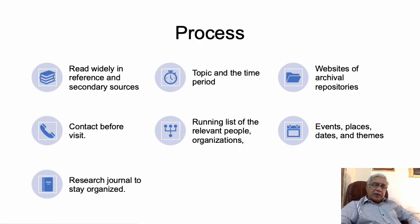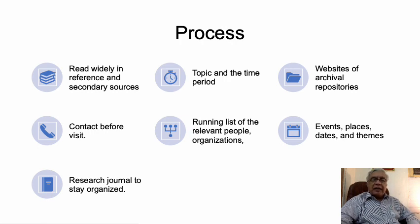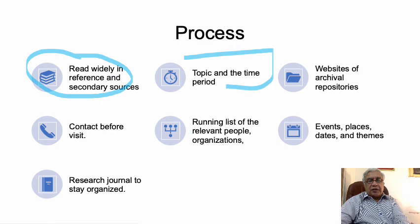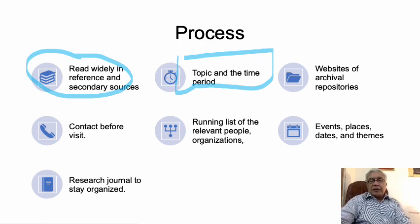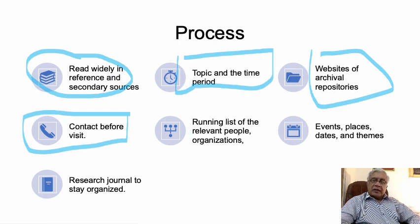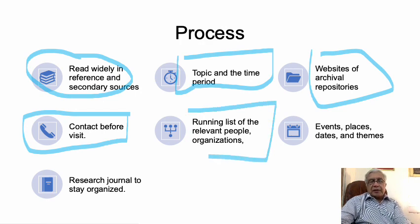This process can also be seen another way. After deciding to access an archive, we will read widely in reference and secondary sources to understand what they say, so that when we reach the particular source, we may understand it better. The topic and time period must also be decided — is it one year, ten years, or some other period? We can also look at websites which store data for further help. Before approaching any of these things, we must contact the manager of such archival places to seek their permission.